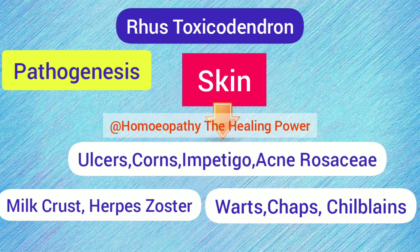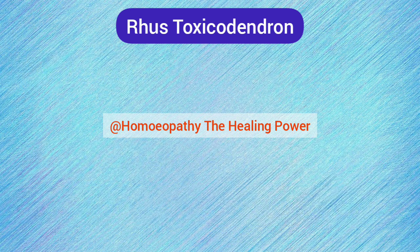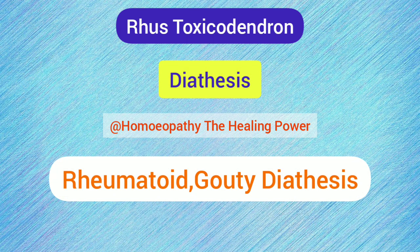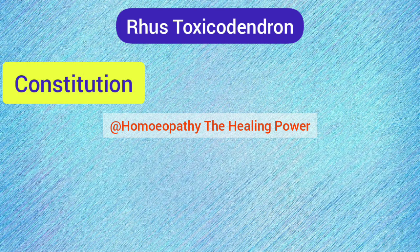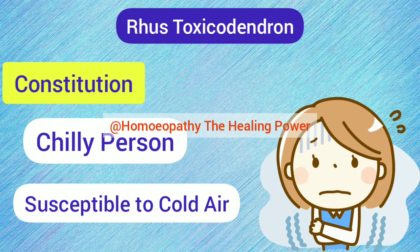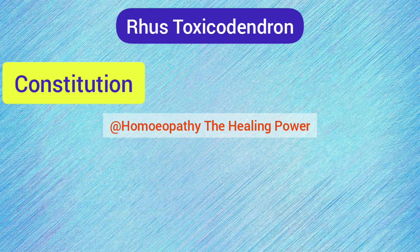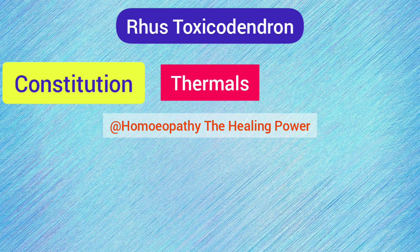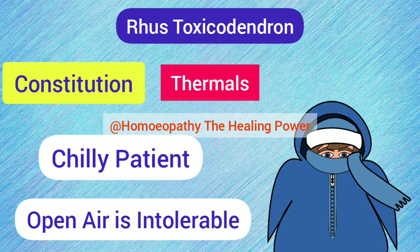Because of its special action on joints and the inflammation seen in joints and other parts of the body, Rhus Tox has rheumatoid and gouty diathesis. Constitutionally, Rhus Tox is suited to very chilly persons — patients who are very susceptible to cold and cold air, such that even a single draught of cold air aggravates or brings on their complaints. Rhus Tox patients are very chilly, and even open air is intolerable to them.